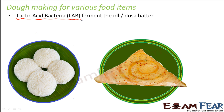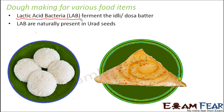These same kinds of bacteria that help in curdling also help in fermenting the idli or dosa batter. Once the batter is prepared — the ingredients being mainly rice and a pulse named urad — these two are ground and mixed together, and then the batter is left undisturbed for quite some time for the fermentation process to take place. Lactic acid bacteria are naturally present in the urad seeds, which is why urad pulse is used for the preparation of idli or dosa.